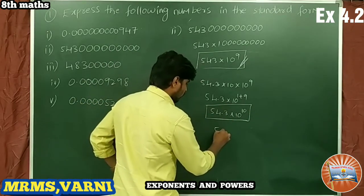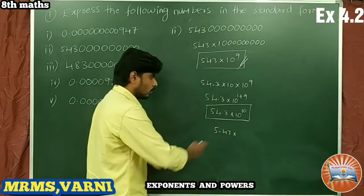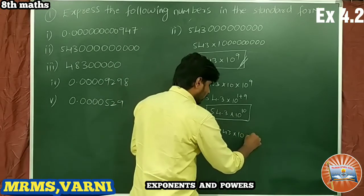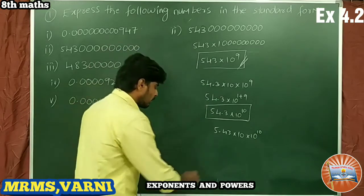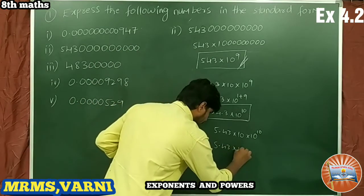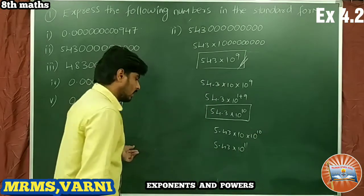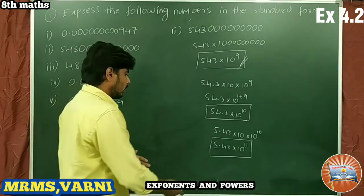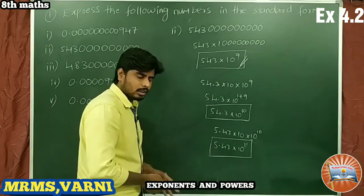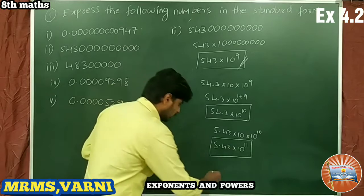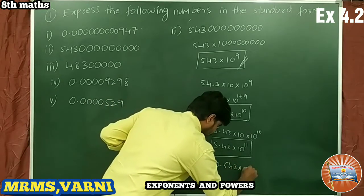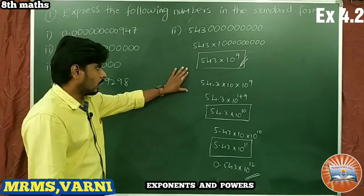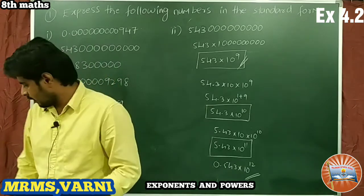Or we can write 5.43 × 10^10 — taking one more 10, giving 5.43 × 10^11. Or even 0.543 × 10^12, by moving the decimal point once more and multiplying by another factor of 10. All of these are correct answers.